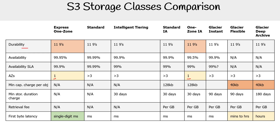For availability, it obviously varies. Standard is the highest, then intelligent tiering at 99.9 — though really it's going to be dependent on whatever tier it's utilizing underneath. Standard IA has 99.9, Glacier Instant has 99.9. The one-zone classes drop to 99.5 and 99.95. For Glacier Flexible and Deep Archive, availability is marked as N/A because you don't get your data immediately — you get it minutes later, so it's not really the same level of availability.